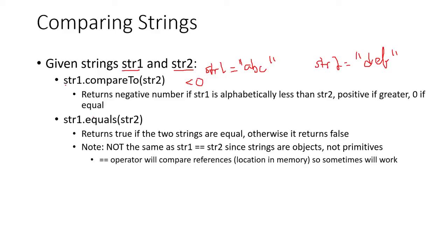So another method we could use is .equals. That returns a boolean value. If they're equal, it'll return true. If they're not the same string, it'll return false. Note that this is not the same as the double equal sign that we would use for numbers, because they are objects, not primitives. The double equal sign operator will compare references, like memory addresses. So it will sometimes work if you remember the discussion about using the constructor or using simply literals.